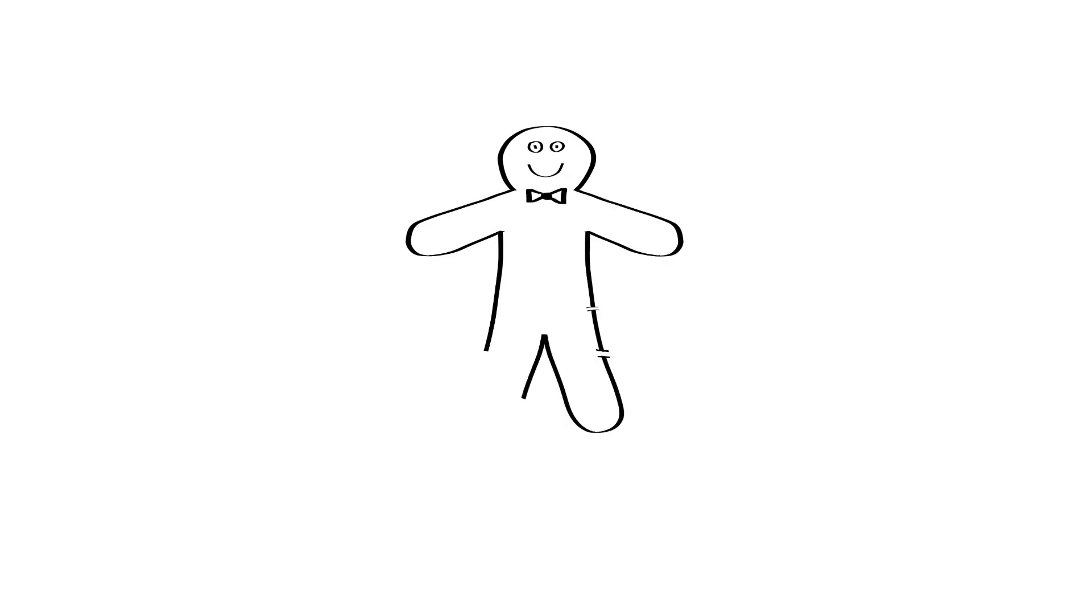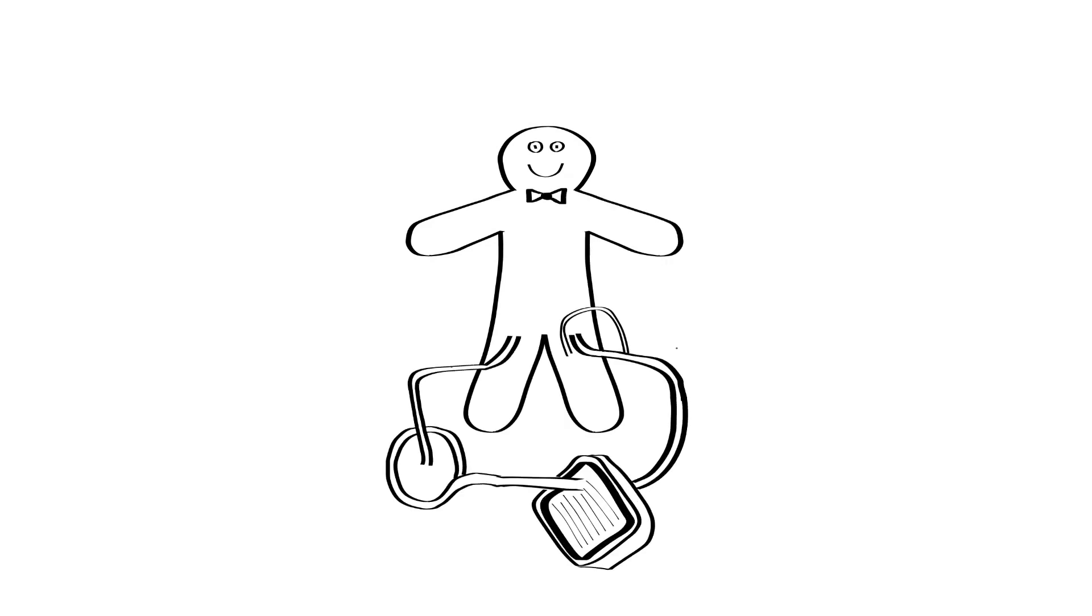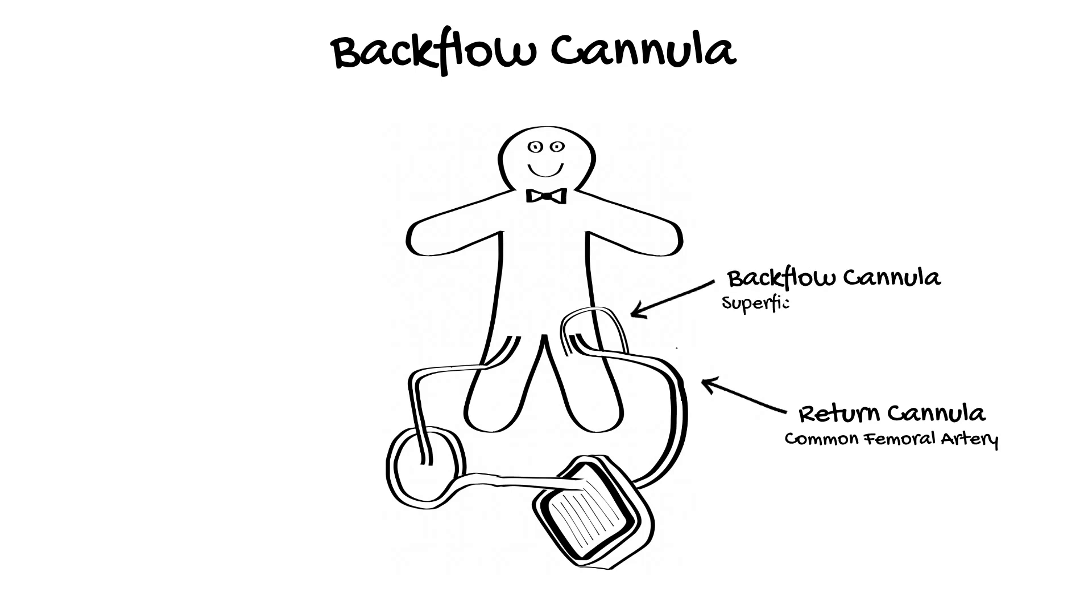One specific difference with a VA ECMO circuit is the requirement for a backflow cannula. As the large return cannula will sit in the common femoral artery, this can occlude blood flow to the leg. To prevent leg ischemia, a smaller cannula is placed in the superficial femoral artery, which is connected into the ECMO circuit and allows downstream perfusion of the leg with oxygenated ECMO blood.